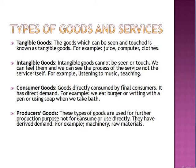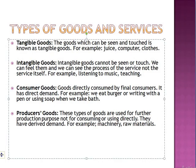Producer goods are types of goods used for further production purposes, not for consuming or using directly. They have derived demand — such as machinery and raw materials. Why? Because a machine is used for producing something else; we don't buy a machine just to keep it in our home. We don't buy raw materials — that means resources, minerals — just for keeping them. We use them for making something else, so we say they have derived demand, not direct demand.